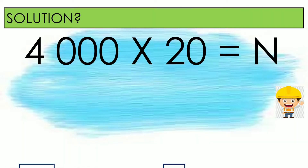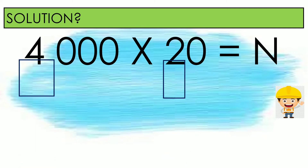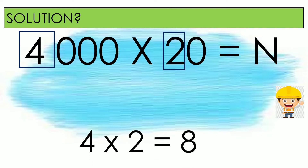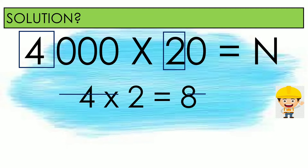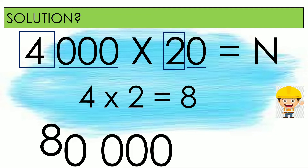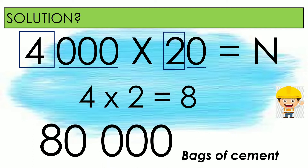Let us solve the numbers. First, multiply the non-zero digits: we have 4 and 2, and 4 times 2 is equal to 8. Then, count the number of zeros for each factor. We have 3 zeros in 4,000 and 1 zero in 20, making 4 zeros in total. We add 4 zeros to the right of 8, giving us 80,000. So for the 20-story building, we will need 80,000 bags of cement.